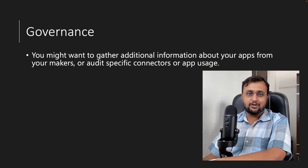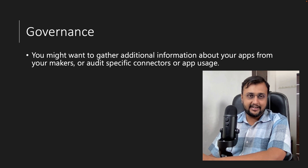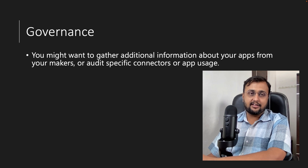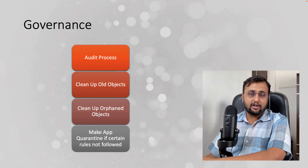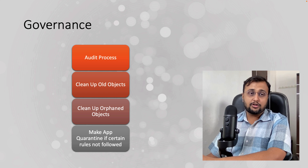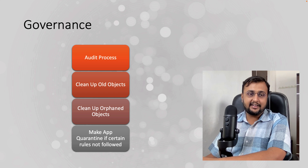Now let's talk about the second component of COE Starter Kit — the governance component. As an admin, it is your duty to gather additional information about the apps your makers are creating for audit purposes: why the app was created and what connectors are being used to develop it. This is also helpful for auditing and for data cleaning processes. The governance component provides the ability to manage the audit process of your apps, clean up old and orphaned objects, and quarantine apps if certain rules are not followed.